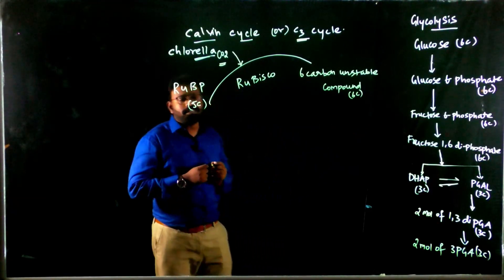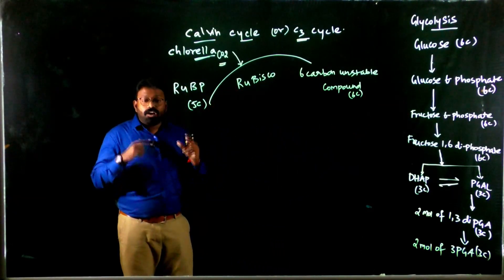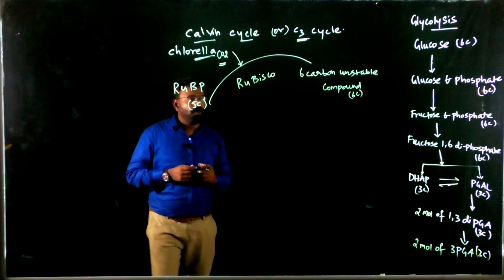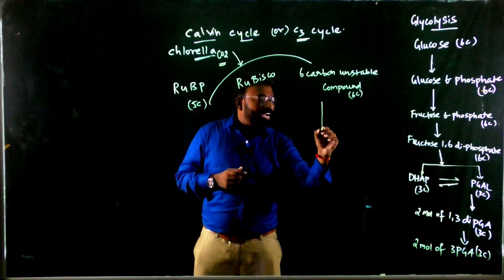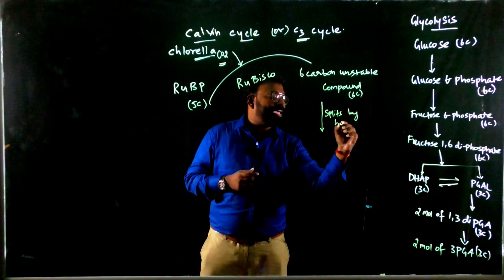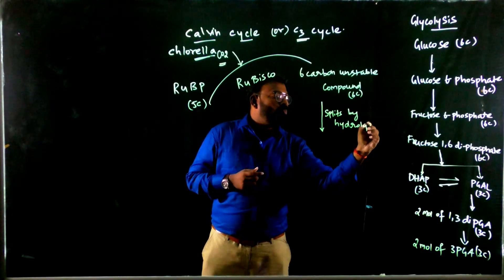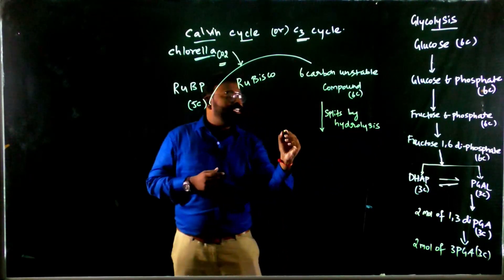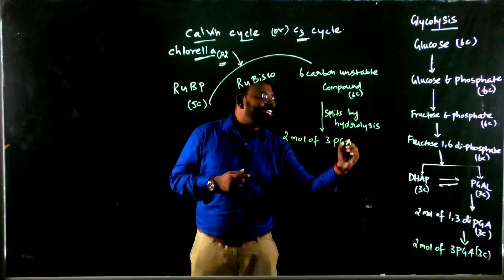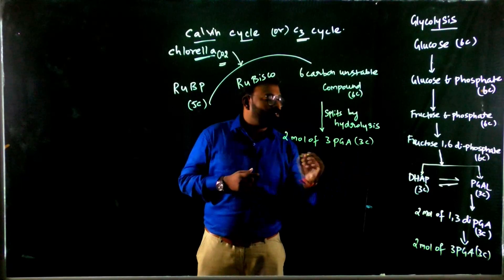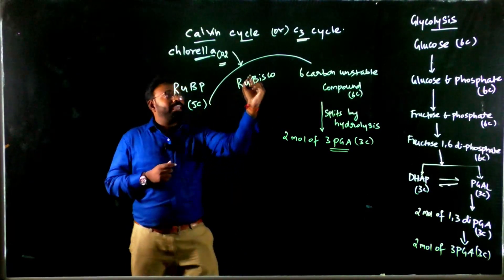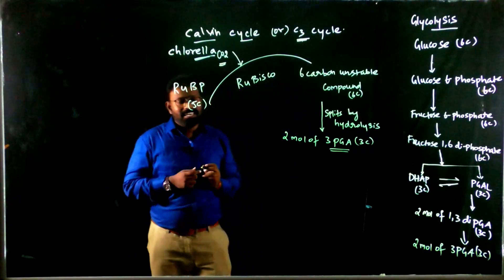The 6-carbon unstable compound does not form a stable compound directly. First it forms a 6-carbon unstable compound that undergoes hydrolysis, splitting to give rise to 2 molecules of stable 3-phosphoglyceric acid. So here the first stable product is 3-phosphoglyceric acid — that is why this pathway is also called the C3 cycle.